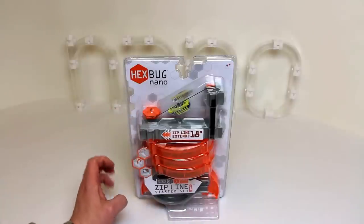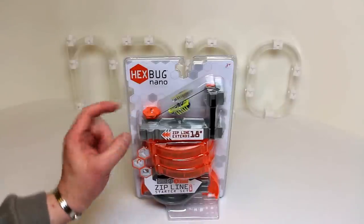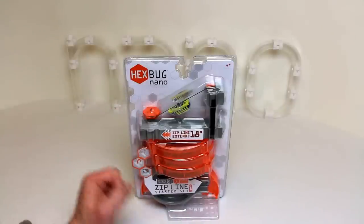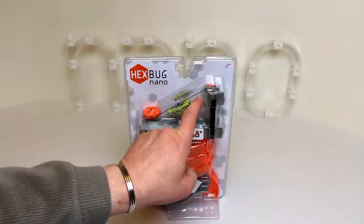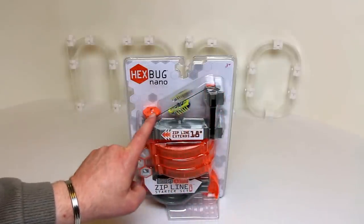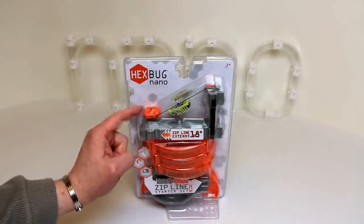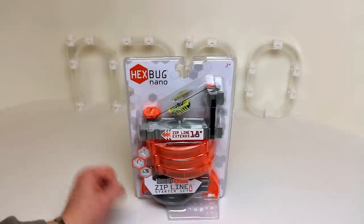The Hexbug Nano V1 is actually wearing a special shroud that goes over it that has a hook on top, such that when any of the bugs come off over here, they hook themselves on the wire, vibrate their way downhill, down to the bottom here, unhook themselves, and then carry on. So let's get this open and show you this in action.